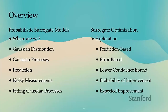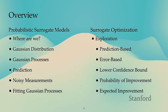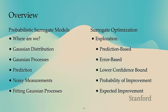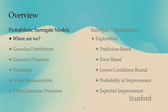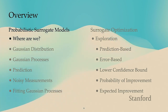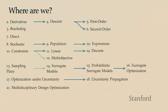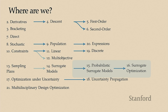We'll start by looking at probabilistic surrogate models — what they are and how to use them — and then look at how to use them for actual optimization. Probabilistic surrogate models form their own branch in the optimization topics we've covered. My hope is that even if this is the first lecture you're attending all quarter, you'd still walk away with a solid understanding of probabilistic surrogate models.